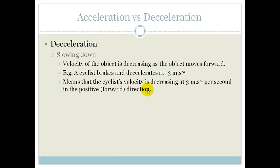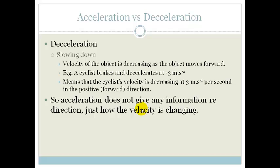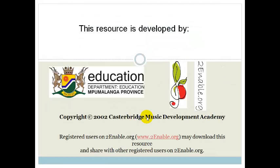So acceleration does not give any information regarding the direction, just how the velocity is changing. Because either he could be increasing his speed in the opposite direction, or he could be slowing down in the same direction.